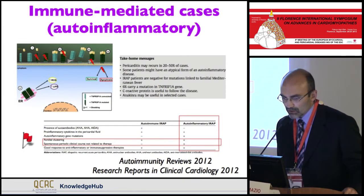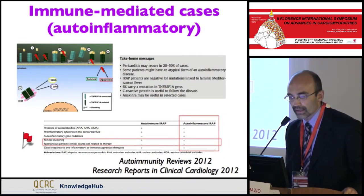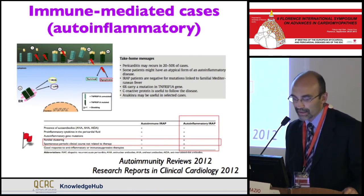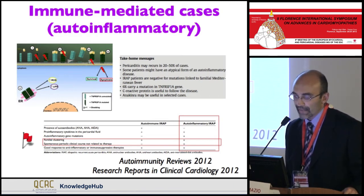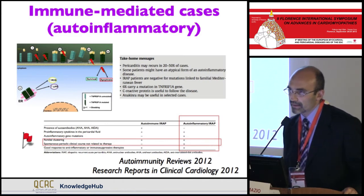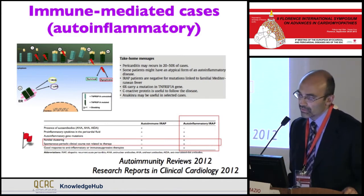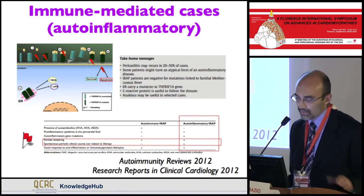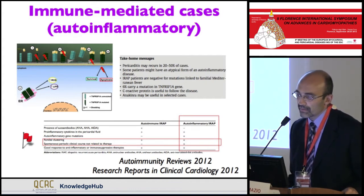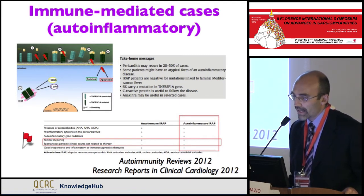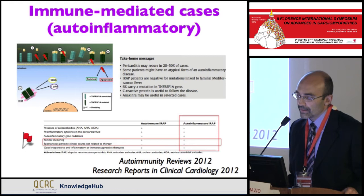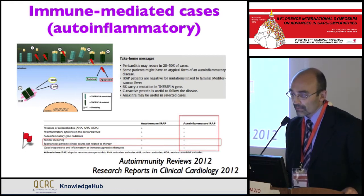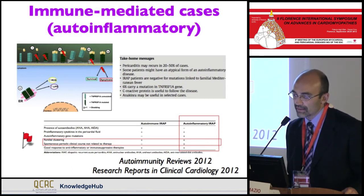There are red flags in pericarditis for autoinflammatory forms, especially familial clustering and a spontaneous periodic clinical course not related to therapy. We know pericarditis may recur in 22 to 50% of cases, and some patients have atypical forms where these red flags help identify them. In Italy, familial Mediterranean fever is very rare, but about 6% of cases carry a mutation for the tumor necrosis factor receptor gene.